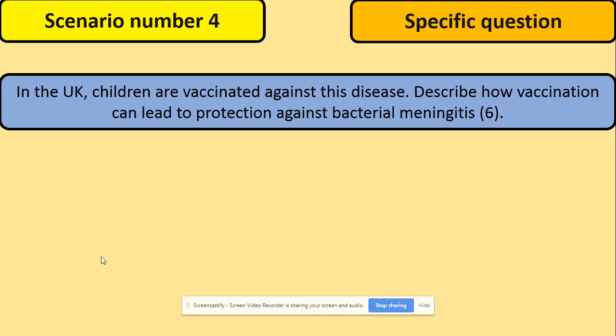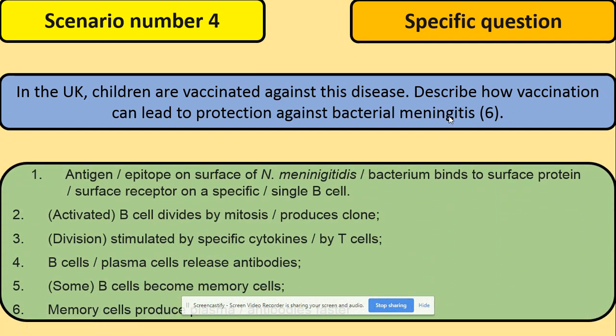Now let's look at how we can make it a little different with a specific question, still about the vaccine. Describe how vaccination can lead to protection against a bacterial pathogen, where you're given the name of the bacteria. Because it's a specific question, in your first answer you must specify where the antigen is coming from, and the rest stays as before. So: general versus specific question — if they name the pathogen, you need to include that in your answer.